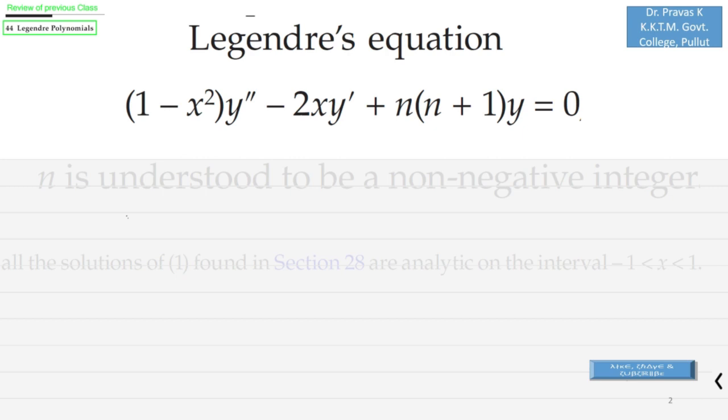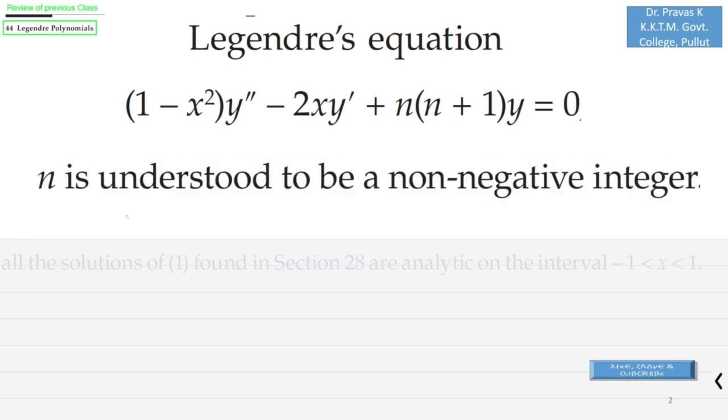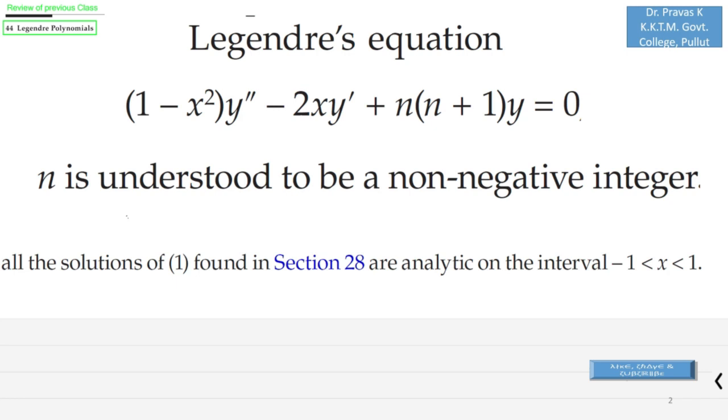In one of the previous sections, using Frobenius series we found the solution to this equation and we have seen that the radius of convergence of that power series is 1. That is, all the solutions of this equation are analytic on the interval -1 < x < 1.